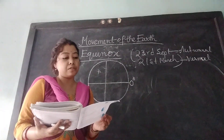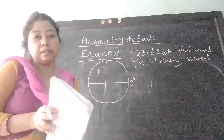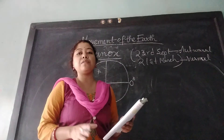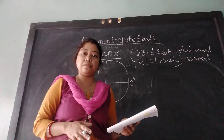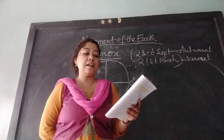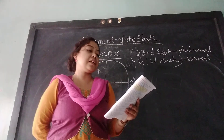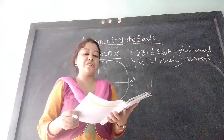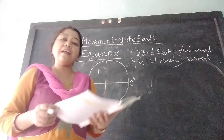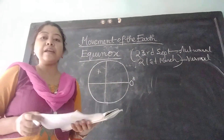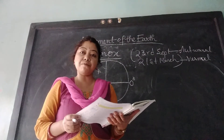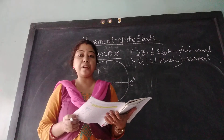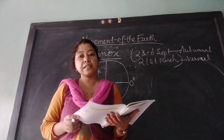Next, we are proceeding to the next part — changes of season. This is our concluding part, the last video of this chapter, The Movement of the Earth. On page 27, there are changes of season. There are four seasons on the Earth: summer, autumn, winter, and spring. These four seasons rotate in a cyclic manner.